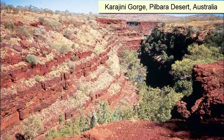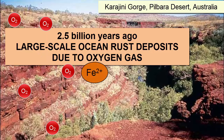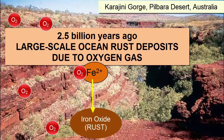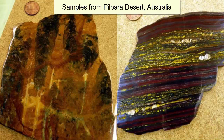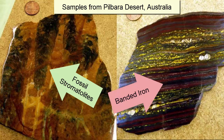However, the largest known deposit of banded iron formations have been determined to be due to a large-scale release of oxygen by photosynthetic stromatolite colonies. These deposits are about 2.5 billion years old and can be found today in the Pilbara region of Western Australia. These rock layers are now the source of the world's largest iron ore mines. Here are two samples from the Pilbara Desert, Australia. On the left you see small fossilized stromatolites, the oxygen producers, and next to it the banded iron.